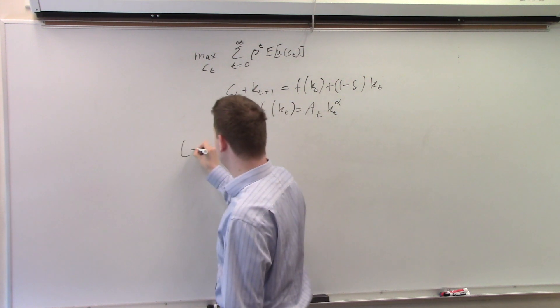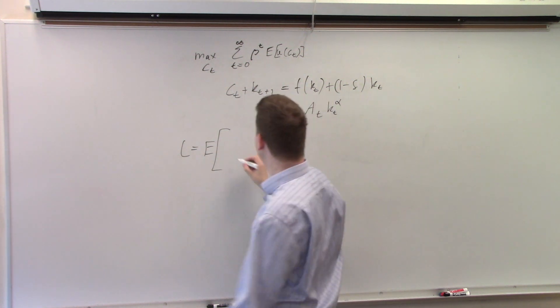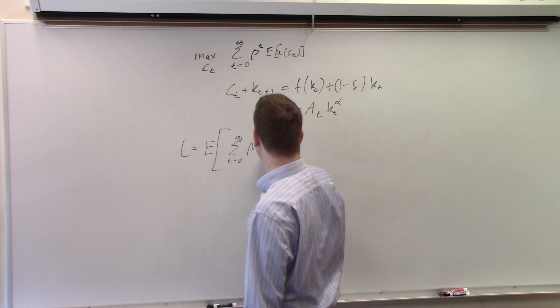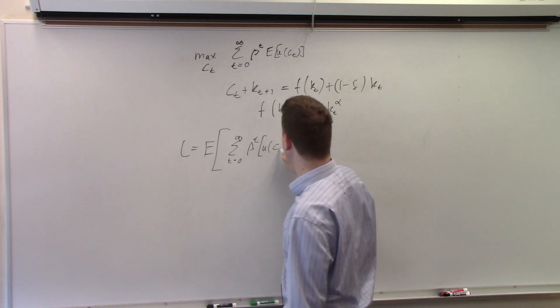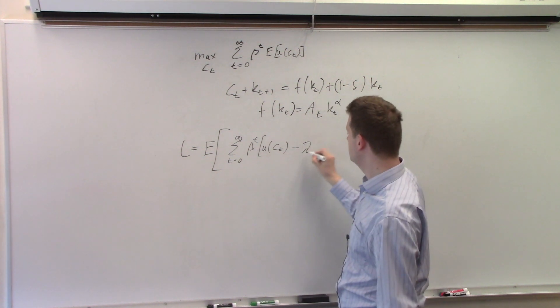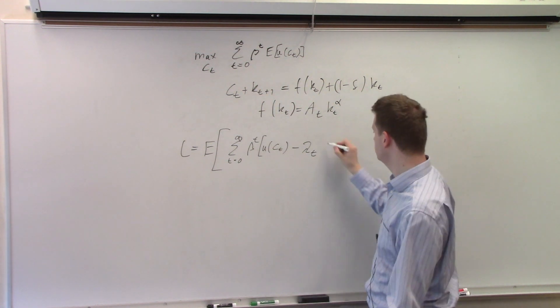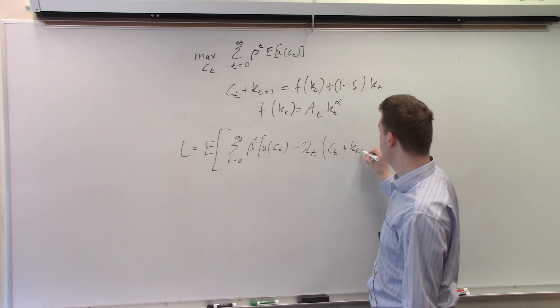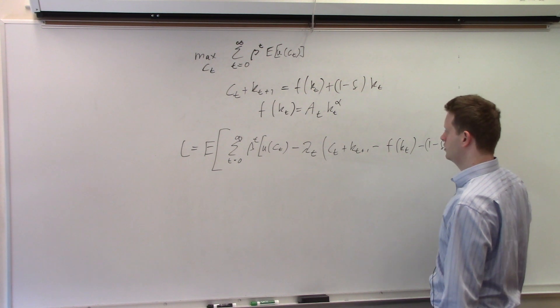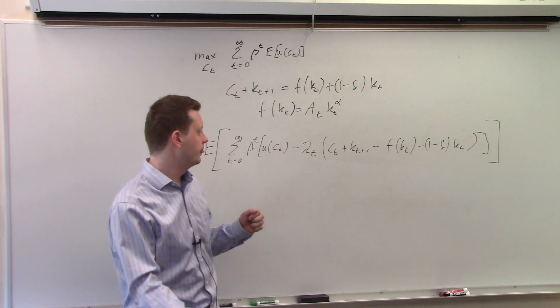Okay, let's set up the Lagrangian. Lagrangian is equal to the expectation. Let's take it all the way out. And now the first term is utility. So that will be the sum t equals zero to infinity beta to the t times u of c_t. That's the standard part. And now we have our constraint which draws minus lambda_t times this equation here. So let's have the Lagrangian multiplier here lambda_t. And we have c_t plus k_{t+1} minus f of k_t minus (1 minus delta) times k_t. And we have this very long expression here for the Lagrangian.